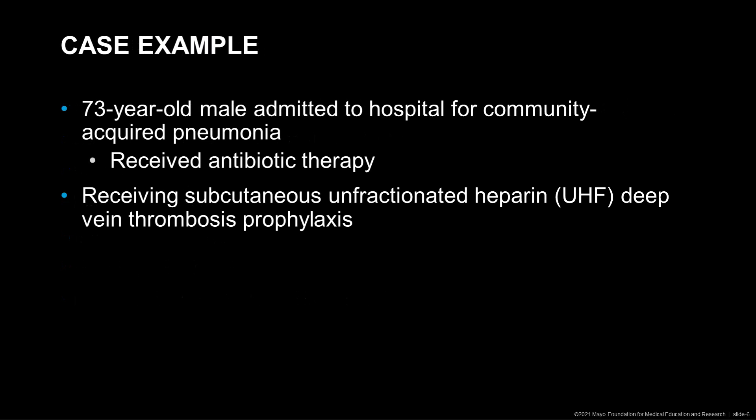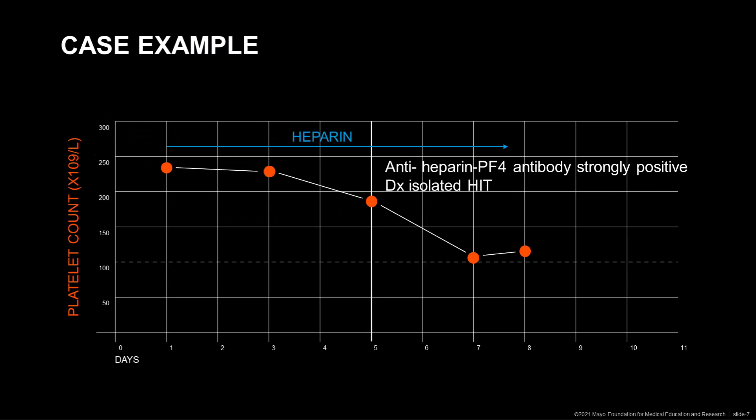We will start with a case example. A 73-year-old male was hospitalized for community-acquired pneumonia. In addition to receiving antibiotic therapy, he also received subcutaneous unfractionated heparin for deep vein thrombosis prophylaxis. This slide shows the clinical course of his thrombocytopenia. On admission, he had a normal platelet count, and on about day five of heparin therapy, the platelet count started drifting down.